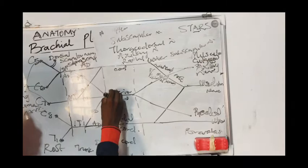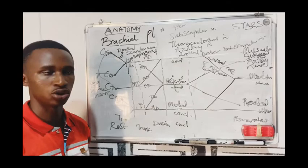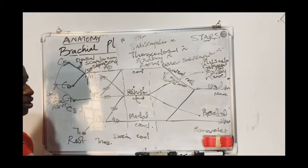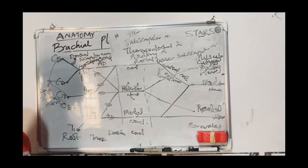You may be asked in an exam: list three side branches from the posterior cord. Don't list the axillary nerve, don't list the radial nerve — they are terminal branches from the posterior cord. List upper subscapular, lower subscapular, and thoracodorsal.